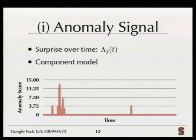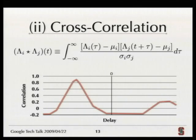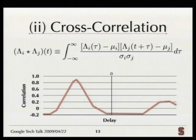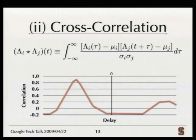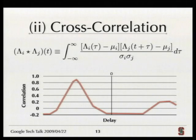Here's an anomaly signal mapped out over time. We'll use the standard statistical technique of cross-correlation, taking signals from different components and cross-correlating them. This gives us whether there is correlation between components, and also what the time lag is between them. For example, if the cross-correlation graph between component I and component J shows a peak at a certain delay, it says component I's anomaly signal is highly correlated with component J's with that delay — component I goes first, then after that delay, something unusual often happens on component J.